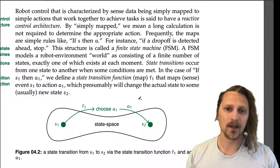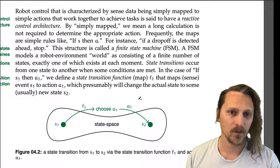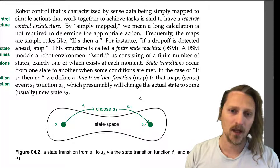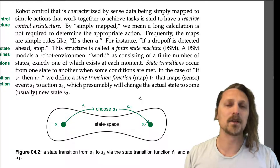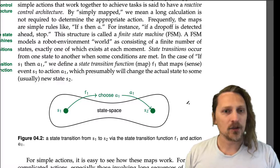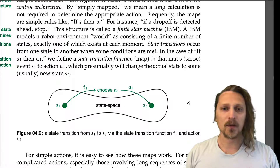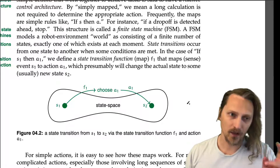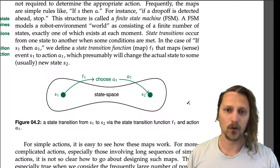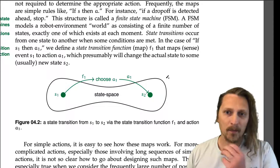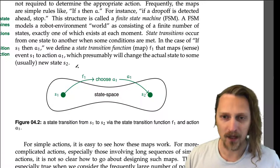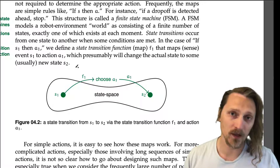This structure is called a finite state machine. A finite state machine models a robot-environment world as consisting of a finite number of states, exactly one of which exists at each moment. State transitions occur from one state to another when some conditions are met. In the case of 'if S1, then A1,' we define a state transition function or map F1, that maps sense event S1 to action A1, which will change the actual state to some new state S2.